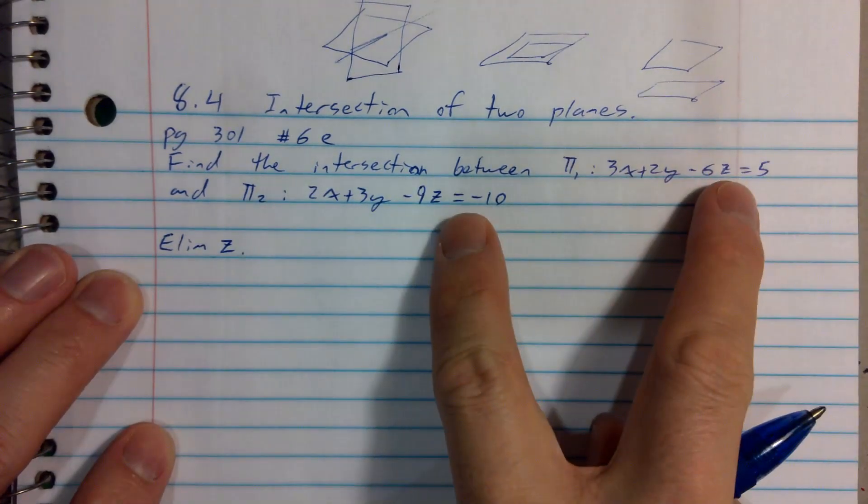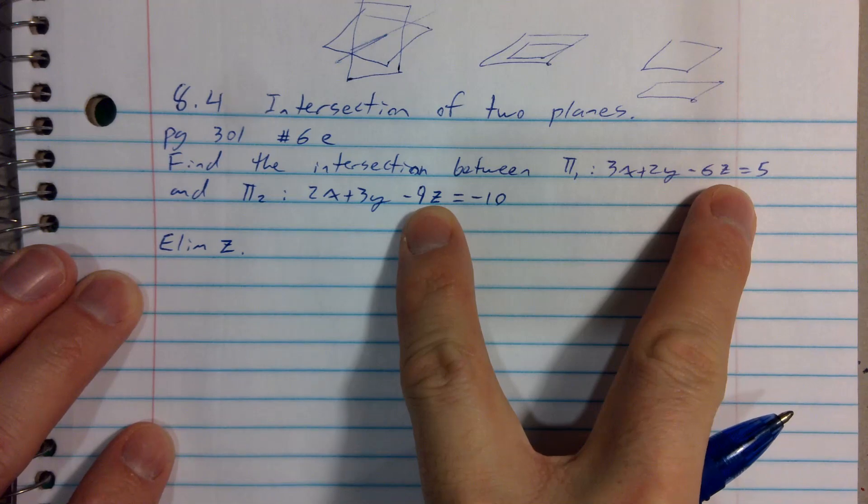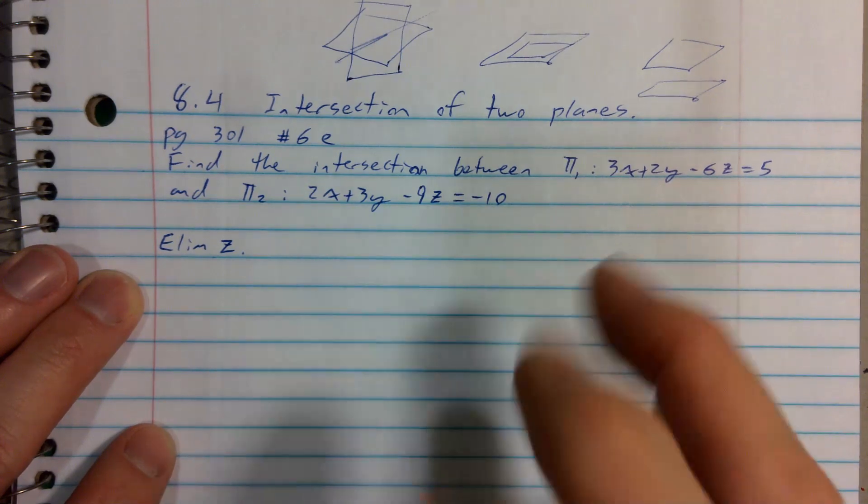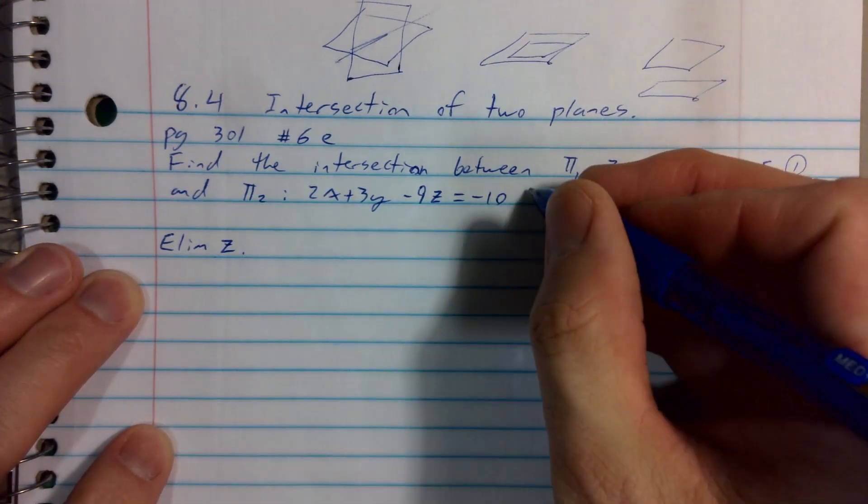And to eliminate zeds, I'd like the coefficients on my zeds to be either the same or opposite. Let's go for the same since they're already the same signs. To do that, let's call this equation 1 and this equation 2.